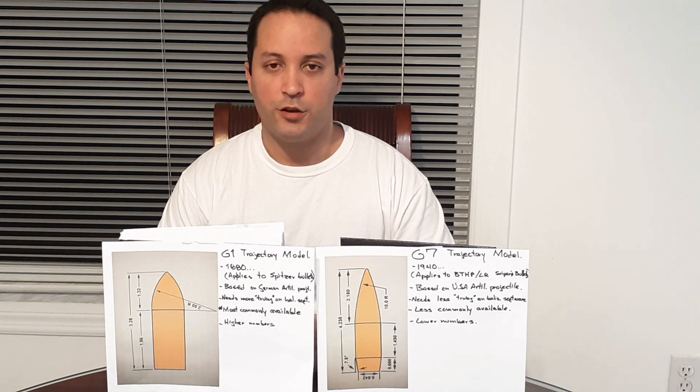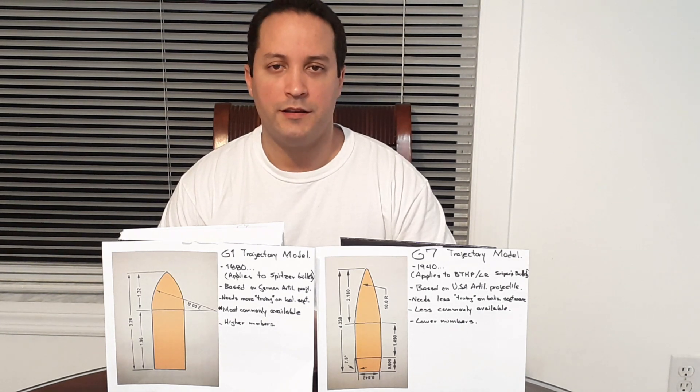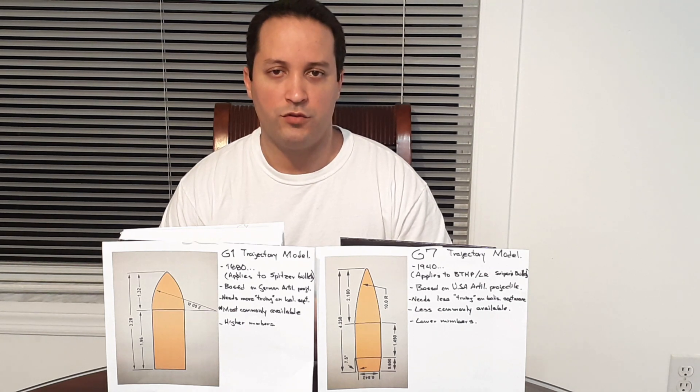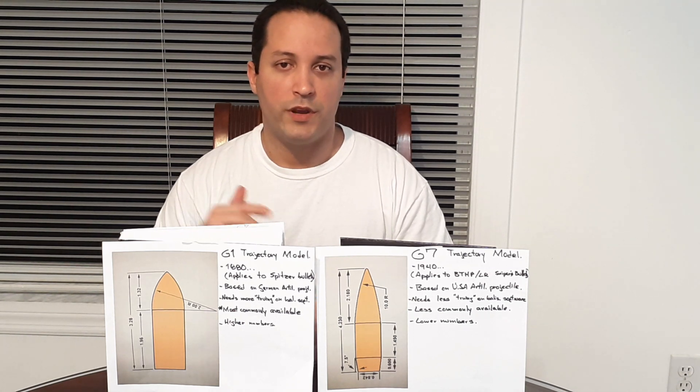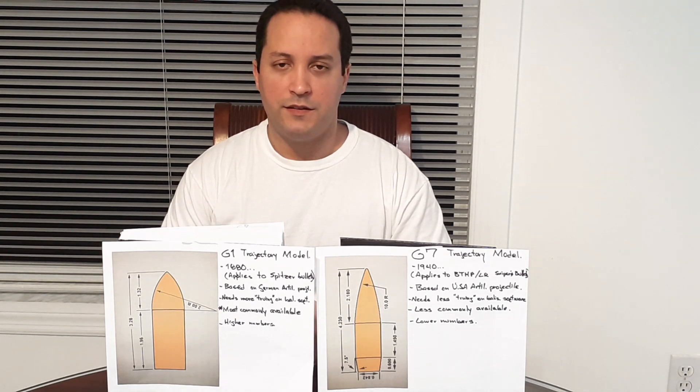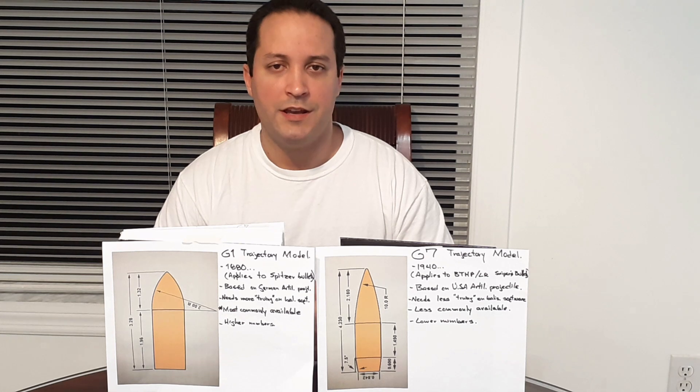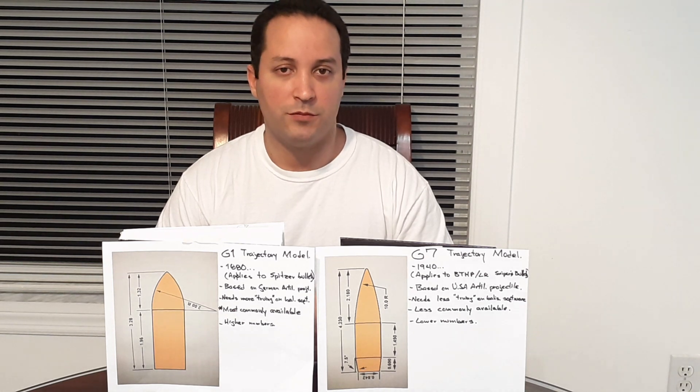The ballistic coefficient is a number that generally gives you the quality of the bullets, how well they'll overcome crosswinds from the side. This number is not absolute and constant; it's generally affected by muzzle velocity.